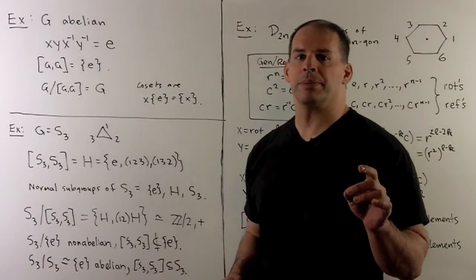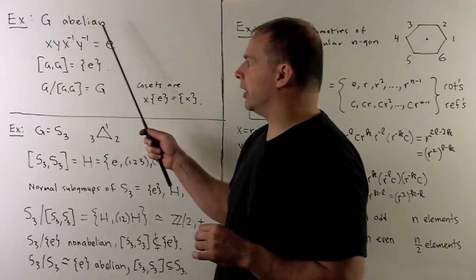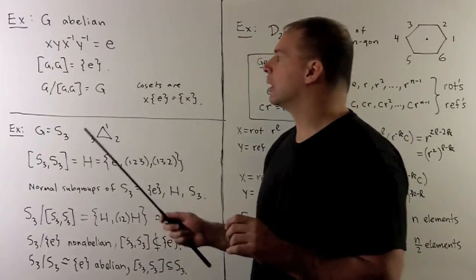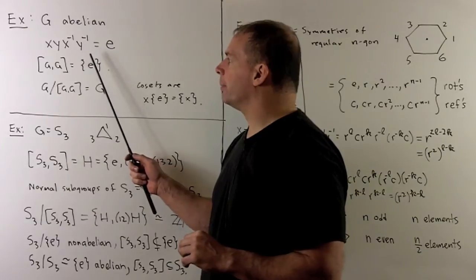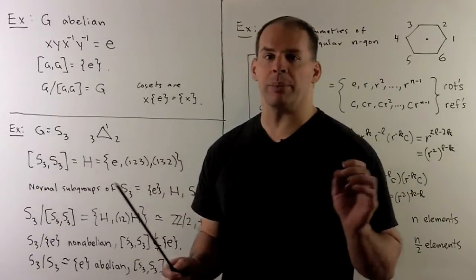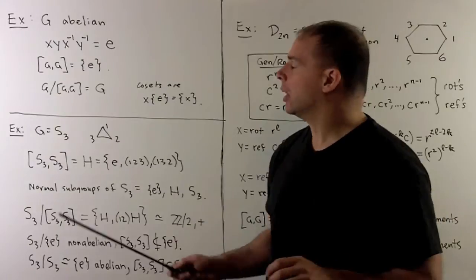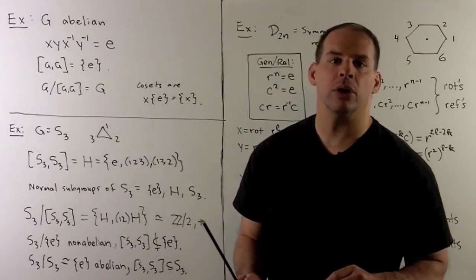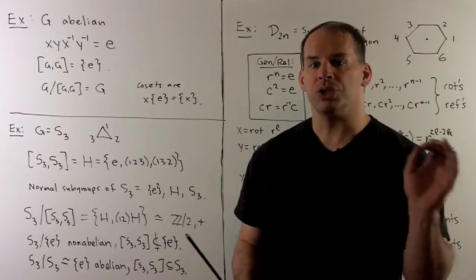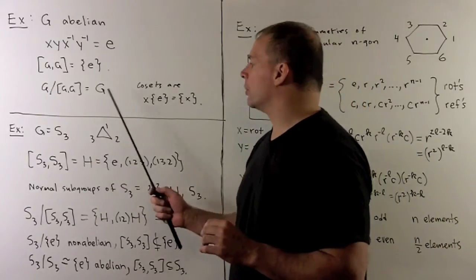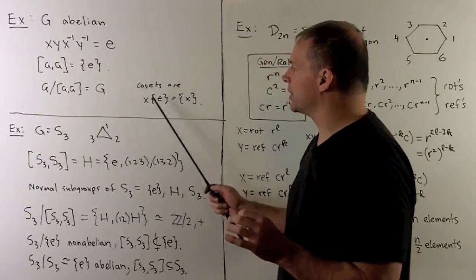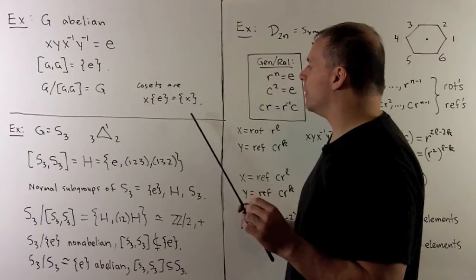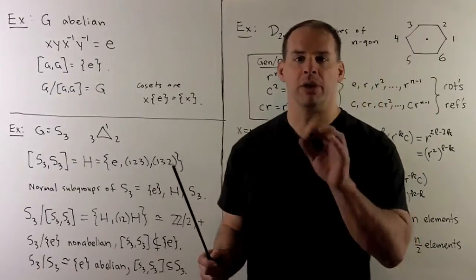For concrete examples: if G is abelian, we can multiply elements in any order, so for a given commutator we can move things around so they cancel in pairs, leaving the identity element. So the commutator subgroup is the trivial subgroup. For the quotient group we just get our group back — the cosets are singletons, one for each element of the group.